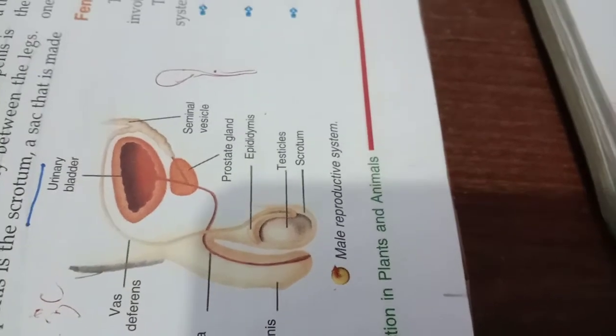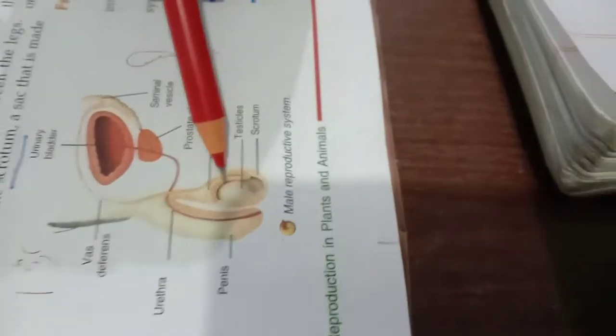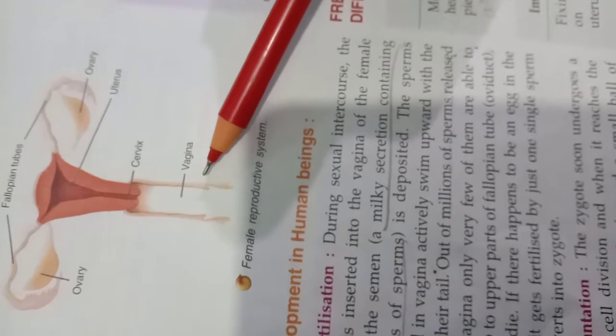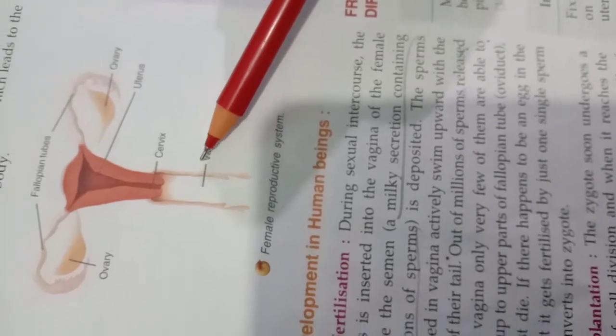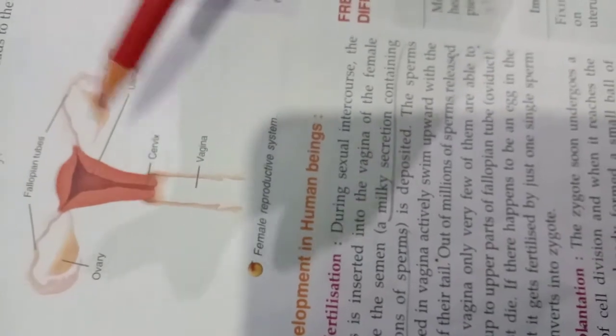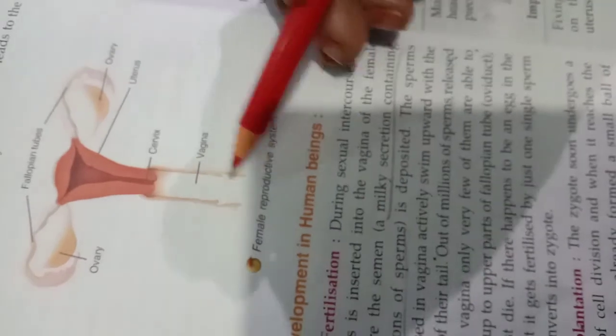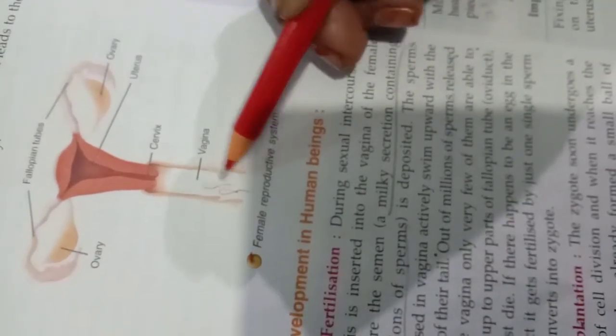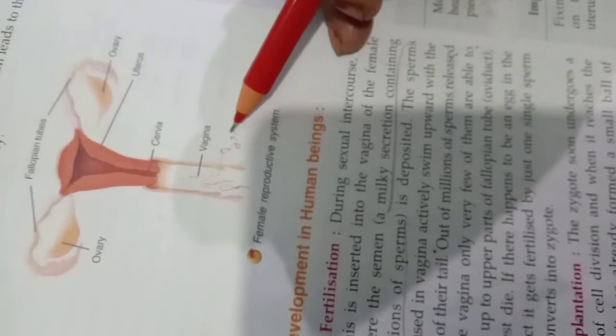Now, come to fertilization. How fertilization occurs? This is the penis. So during fertilization, you can see this diagram I had shown you in the previous class. During fertilization that is called as the process of sexual intercourse or coitus. What happens? The penis is inserted into the vagina.